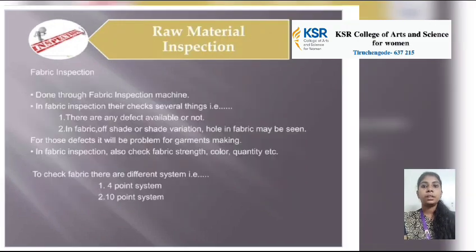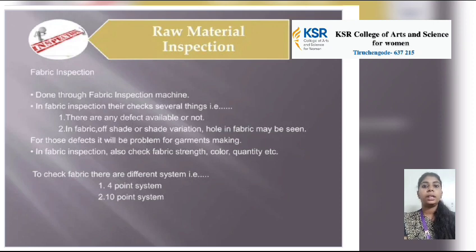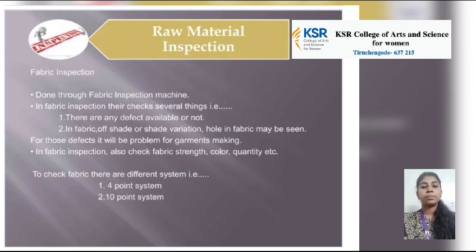Raw Material Inspection: Fabric Inspection is done through a Fabric Inspection machine. During inspection, they check for defects such as shade variation, holes in the fabric, and other issues that could cause problems in garment making. Fabric Inspection also checks fabric strength, color, and quality. To check fabric, there are different systems: the four-point system and the ten-point system.